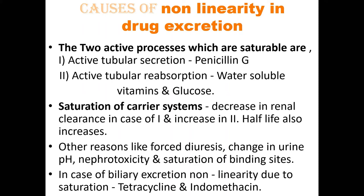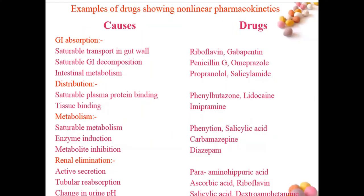A table shows drugs exhibiting nonlinear pharmacokinetics and their causes. For example, in absorption from the GIT, saturable transport at the gut wall is seen with riboflavin and gabapentin. Saturation in GI decomposition is seen with penicillin and omeprazole. Intestinal metabolism examples include propranolol and salicylamide. Different causes leading to non-linearity are summarized with examples for each drug.